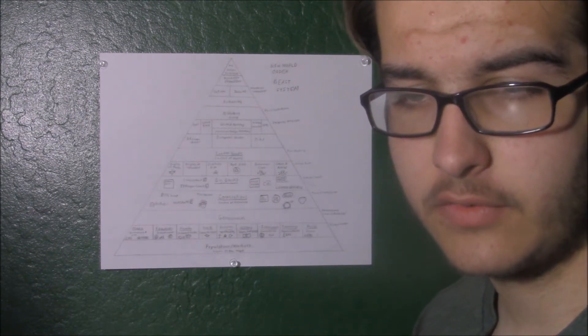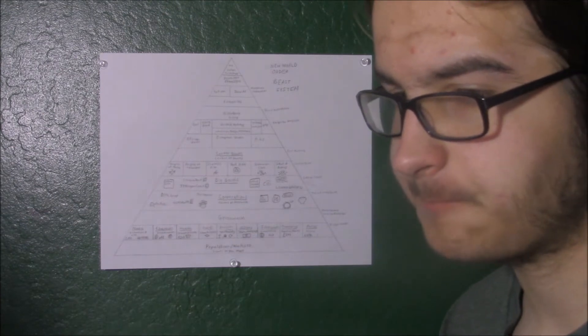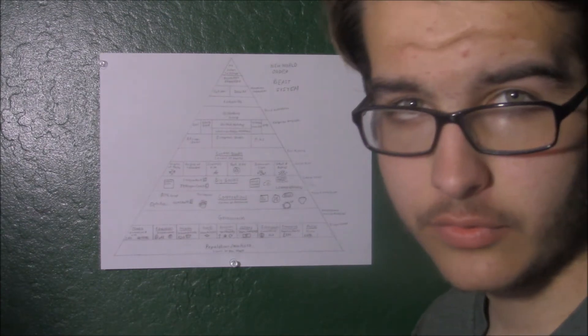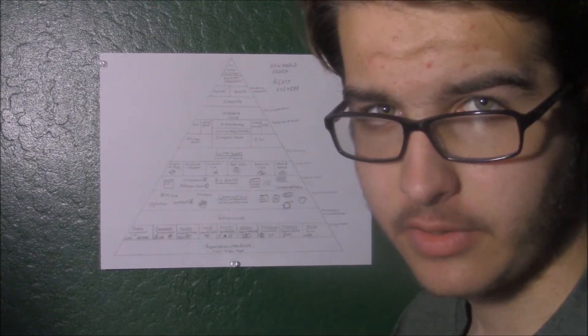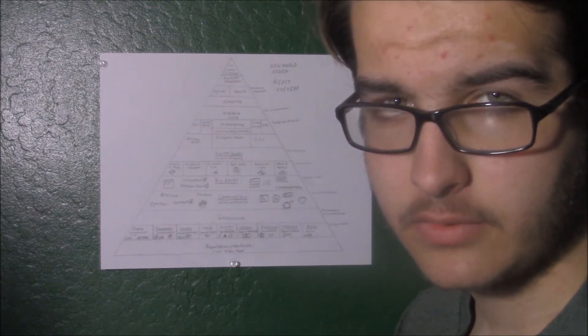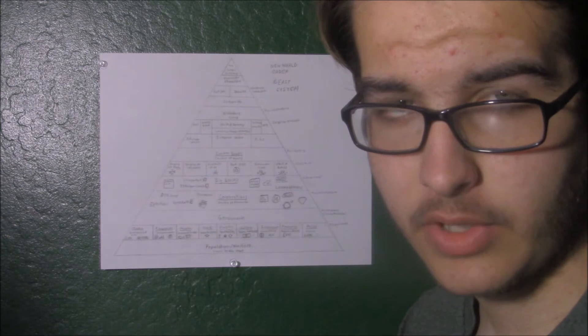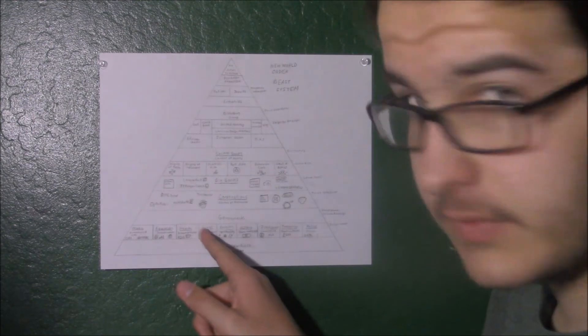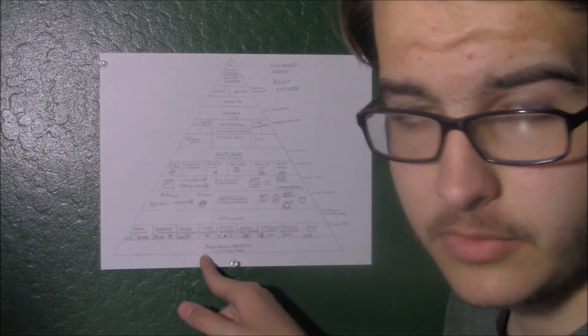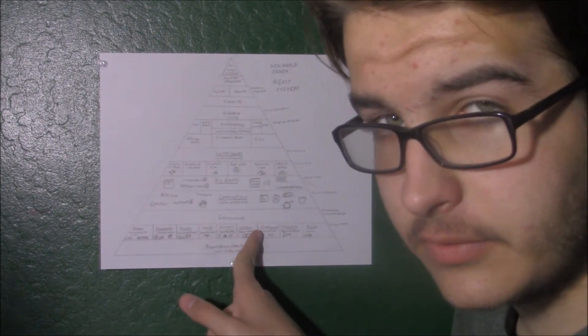These videos are about the new world order, the beast system, Babylon - there are many names for it - and how they are controlling us and plan to control the world. The first two episodes I talked about the nine areas of control. This is the new world order hierarchy pyramid which I drew.